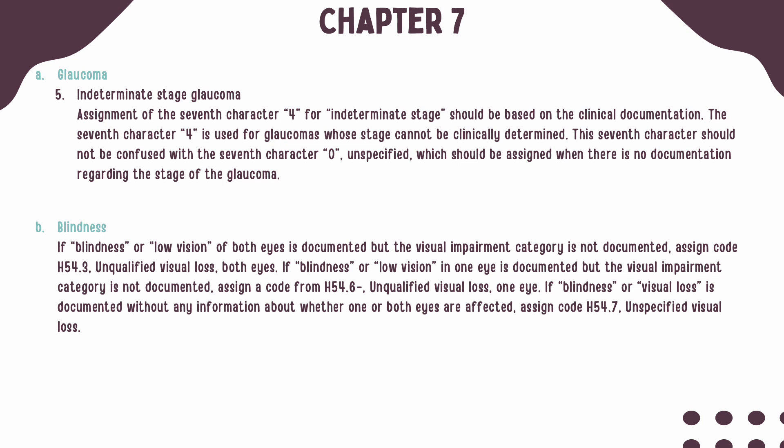If blindness or low vision is documented without specification of laterality, either one eye or bilateral, then you should assign code H54.7.